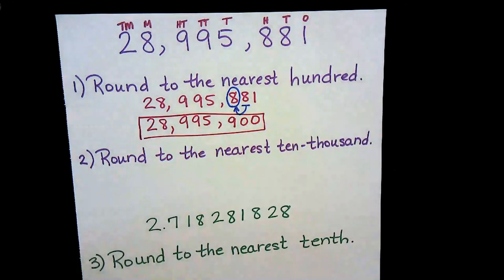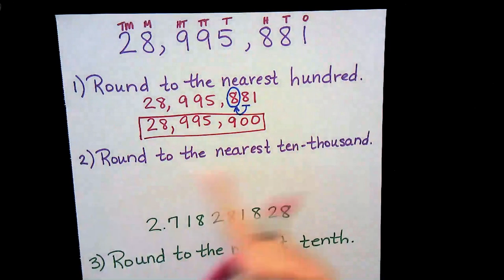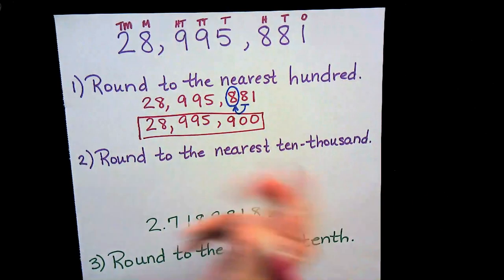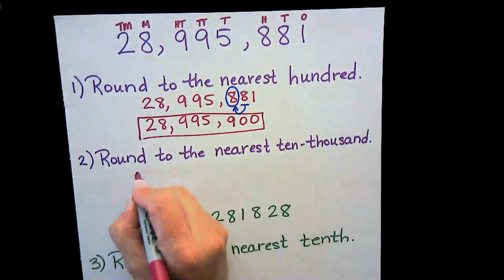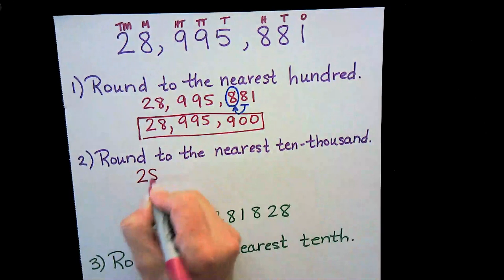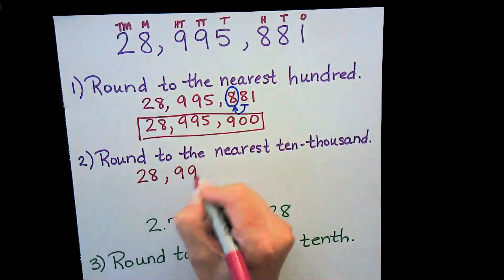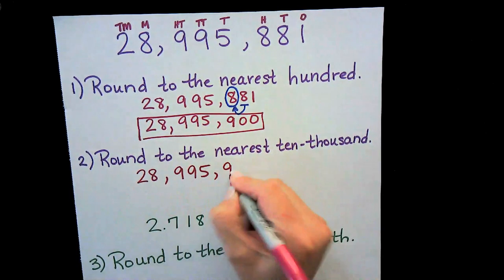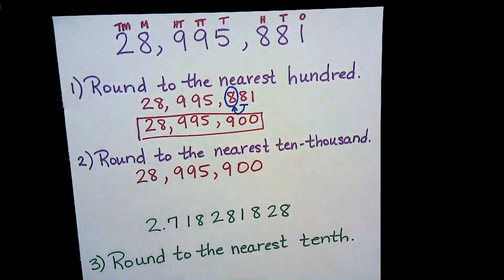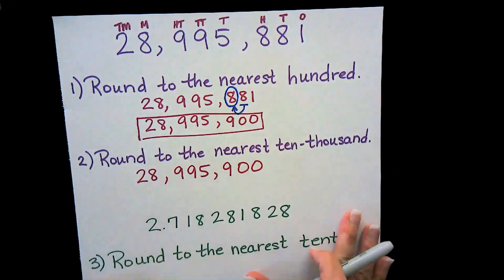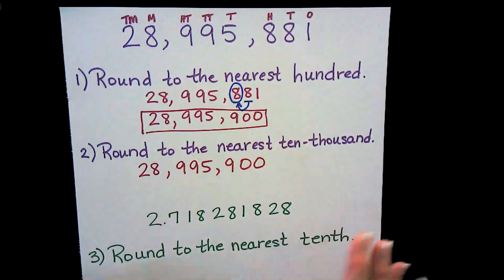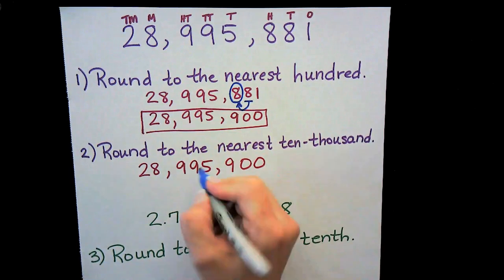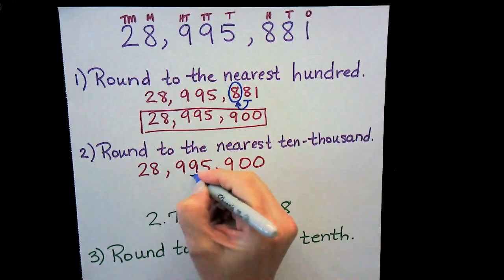Now let's do one more. We'll round the same number but this time to the nearest ten thousands. We take our number just like before and circle the place value we want to round to — the ten thousands — which is this digit here.